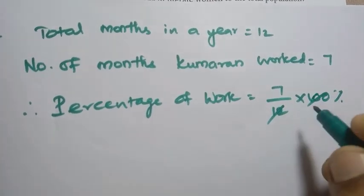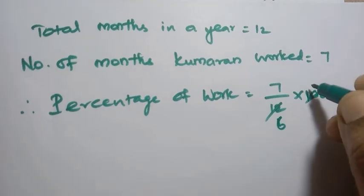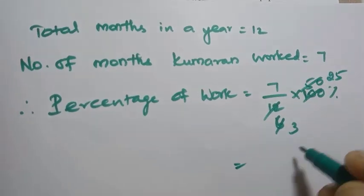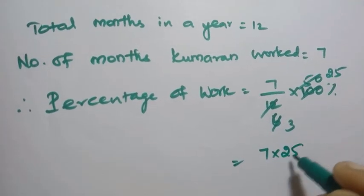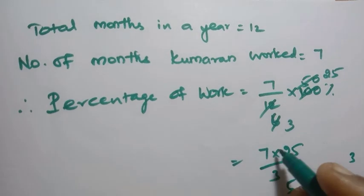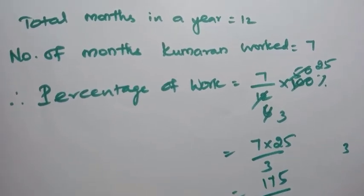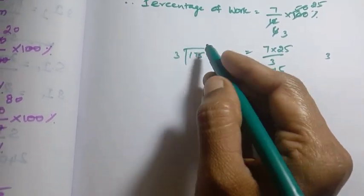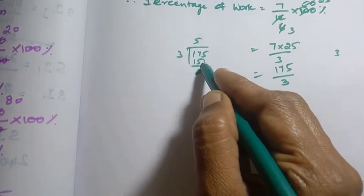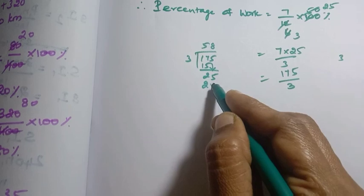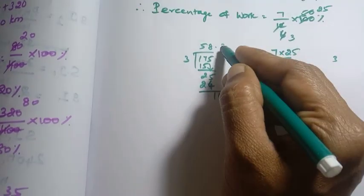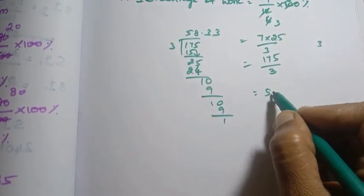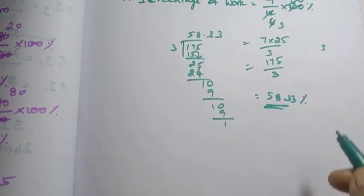Cancel: 2 sixes are 12, so we get 7 into 25 by 3 = 175 by 3. Now divide 175 by 3: 3 fives are 15, remainder 1, bring down 7, 3 eights are 24, remainder 1. Point zero: 3 threes are 9, remainder 1. This repeats. So the answer is 58.33 percent.